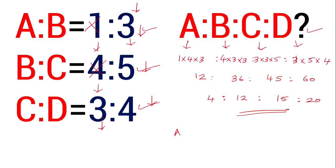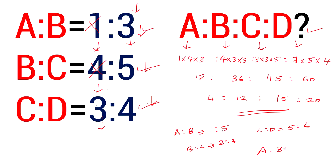Now you have to try this. In the comment section: A is to B is equal to 1 is to 5, B is to C is equal to 2 is to 3, and C is to D is equal to 5 is to 6. Find A is to B is to C is to D. Post your answer in the comment section. Try the simple method. If you have any doubts, post them.